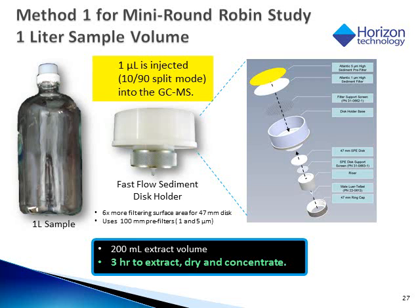A one-liter sample was extracted using a fast-flow disc holder, now called the Easy Flow Disc Holder, which provides six times more filtering surface for the 47-millimeter disc. It uses 100-millimeter pre-filters, both one and five micron filters combined, to aid in passing 1,000 milliliters through the disc quickly. The extraction volume is 200 milliliters, and the time to extract, dry, and concentrate the sample is three hours.